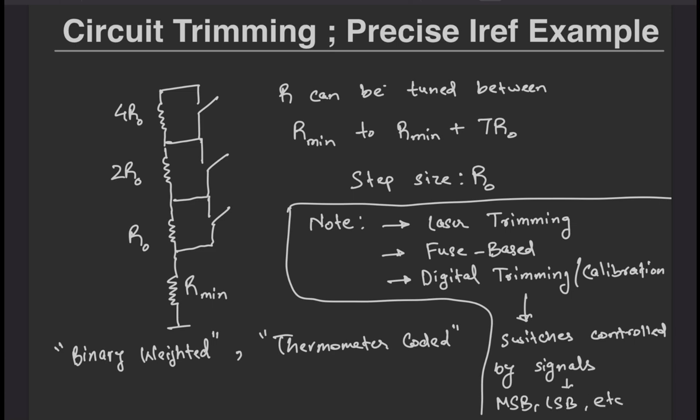To summarize, trimming refers to the adjustment or fine tuning of components in a circuit so as to get a desired result across corners. The accuracy depends on the resolution of the trimming that we use. In the case of the DAC, it would be the LSB of the DAC which predicts the minimum adjustment that we can make to the device value.